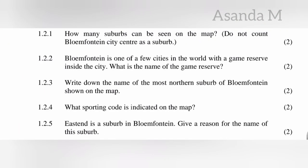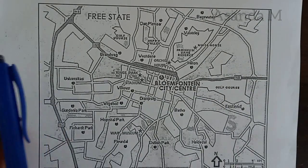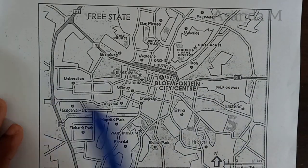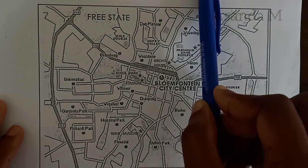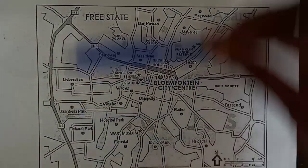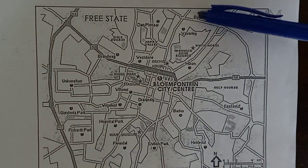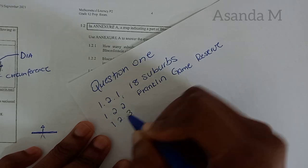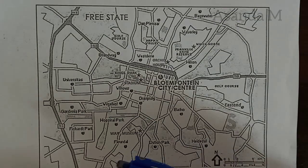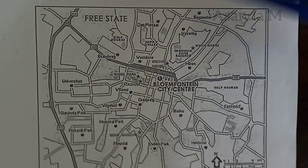Question 1.2.3: write down the name of the most northern suburb of Bloemfontein shown on the map. North is in that direction - upward - so we look for the suburb highest on the map. The most northern suburb is at the top, and checking the spelling it starts B-A-I...